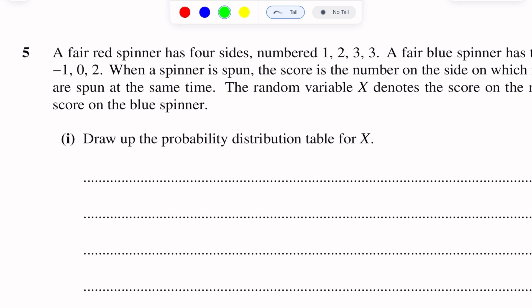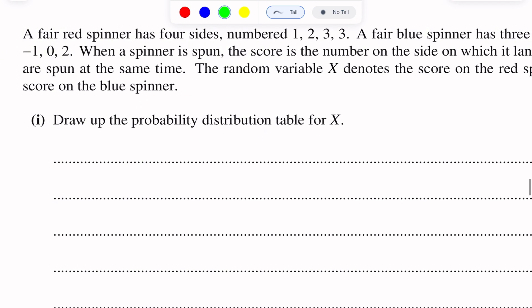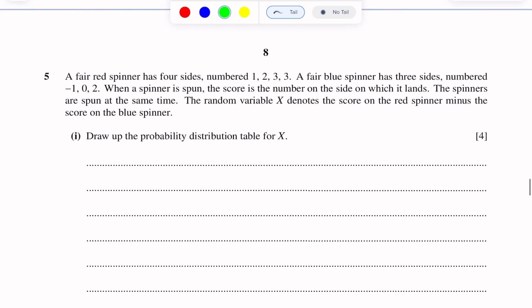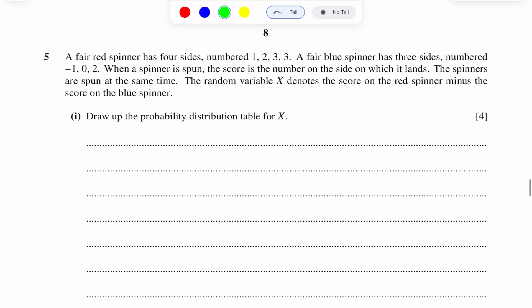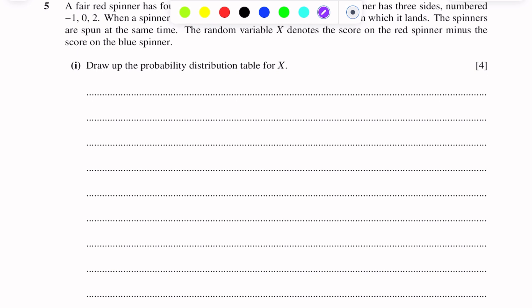Before drawing the probability distribution table for X, we will first find all the possible outcomes. To find all the possible outcomes, we have to draw a possibility diagram — we will make a table.